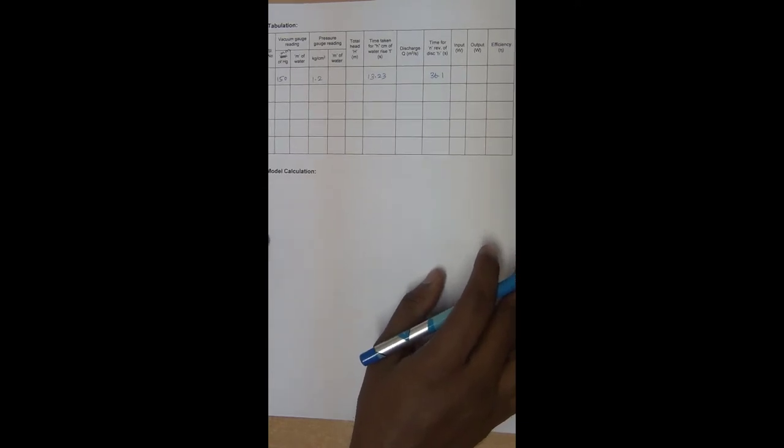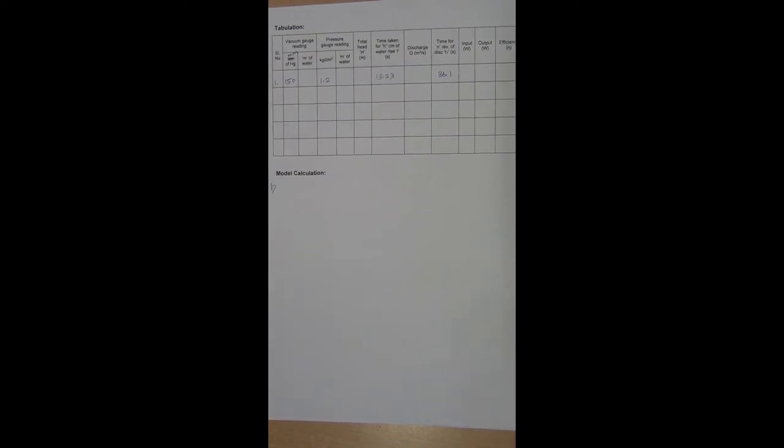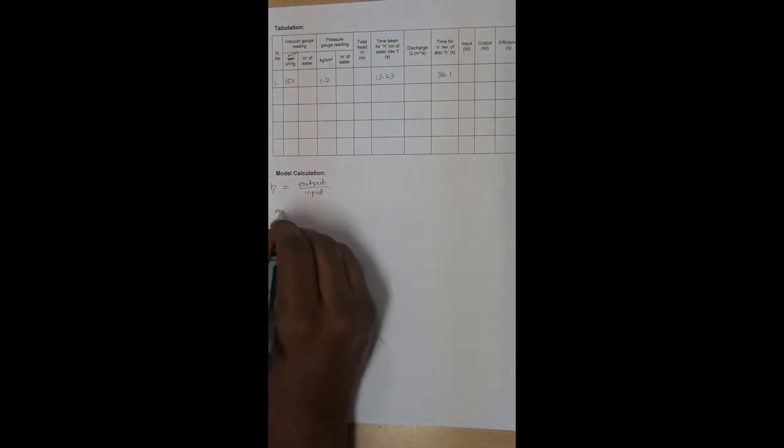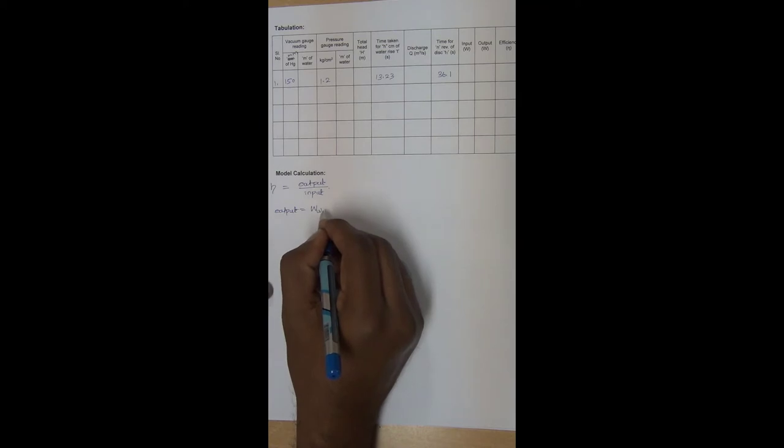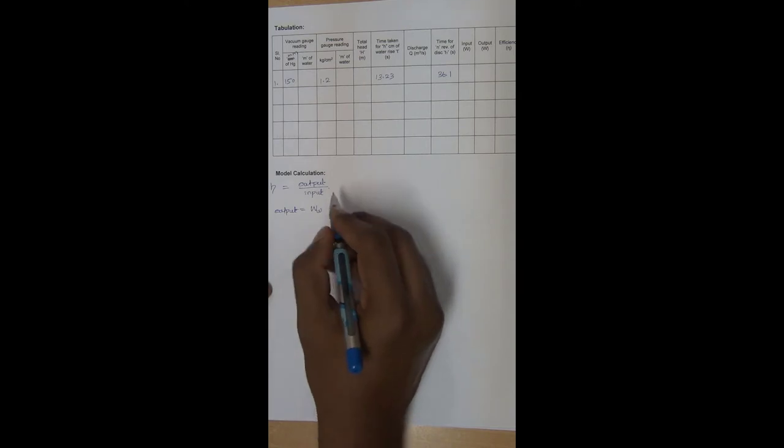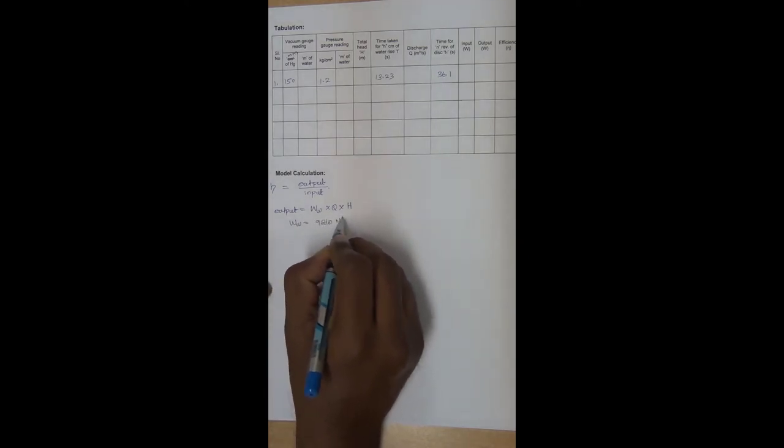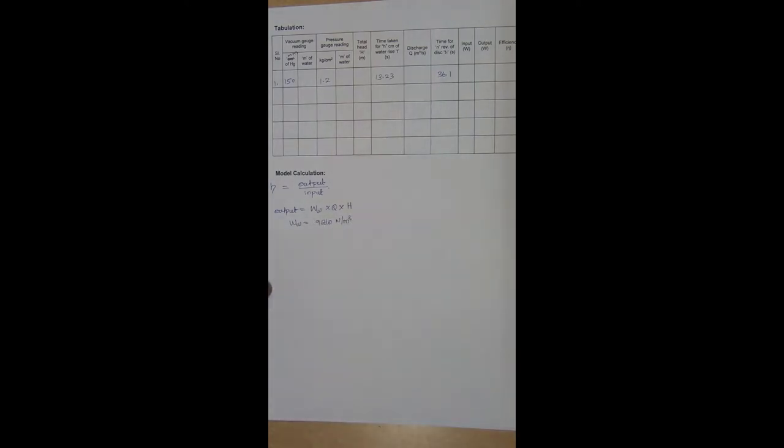Now we are going to proceed with the formula for efficiency. Efficiency is equal to output by input. Output of the pump is ww because reciprocating pump will pump the water. So we are going to write specific weight of the water into Q into H. Specific weight of water is known to us, we have wrote in the observation. So 9810 Newton per meter cube. So ww is over.